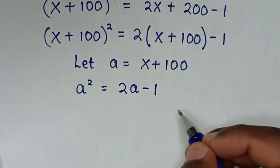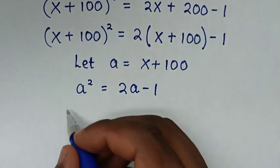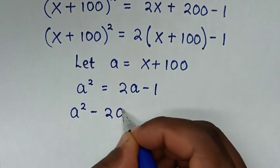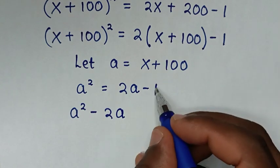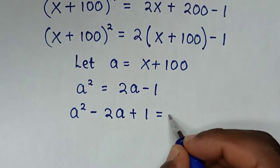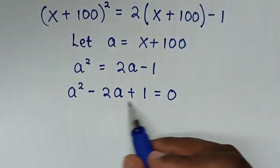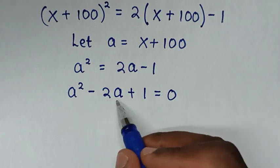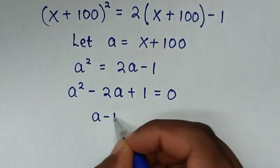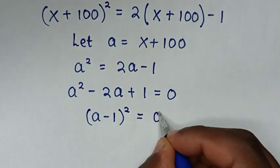In the next step, we take 2a to the left side to get a² - 2a, and take -1 to the left side to get +1, equal to 0. This quadratic equation a² - 2a + 1 is the same as (a - 1)² = 0.